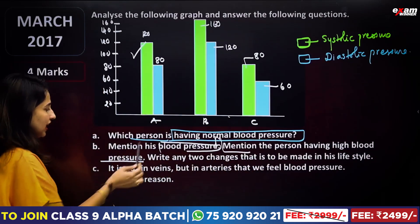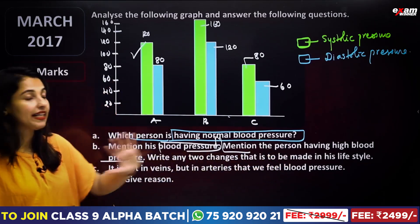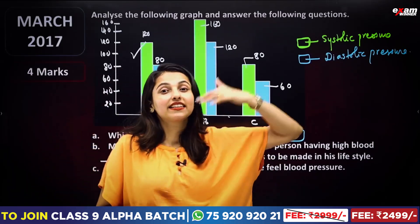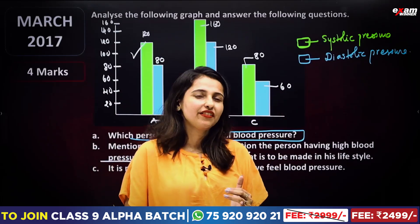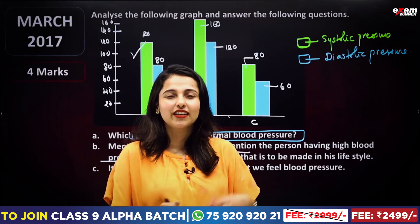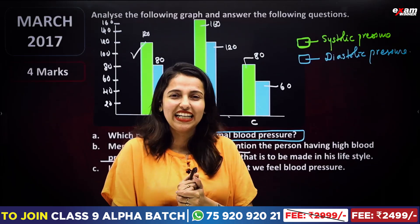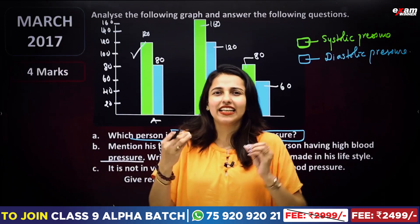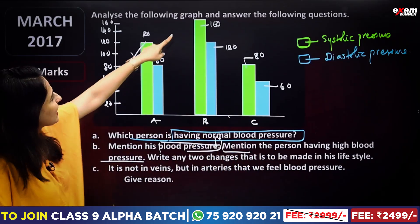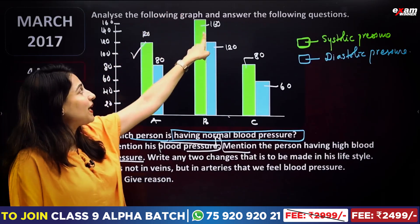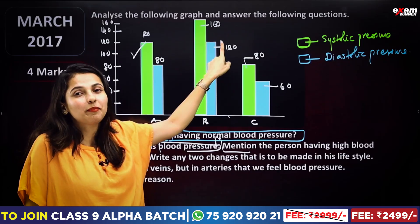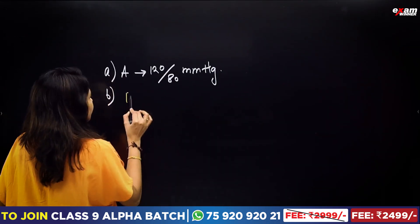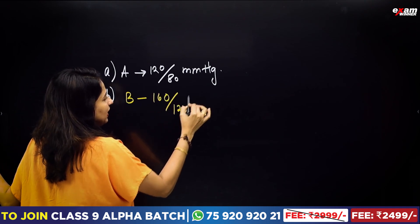Mention the person having high blood pressure and write any two changes that need to be made in his lifestyle. So the normal blood pressure is 120 over 80 mmHg. In B, systolic is 160 — so B has high blood pressure, that is 160 over 120.